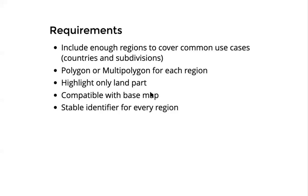One important detail is that a country typically extends out into the ocean for about 12 nautical miles. While that's technically true, if we highlight it on the map, we would only like to show the land part, not the ocean part. Another very important aspect is compatibility with the base map — if our base map uses boundaries from OpenStreetMap, it makes sense to also use the same OpenStreetMap data for our highlight polygons.